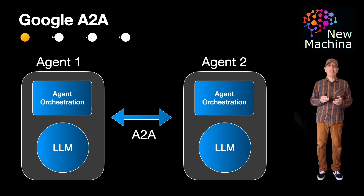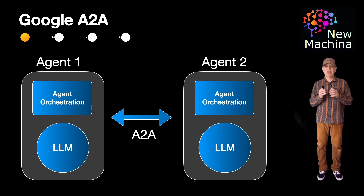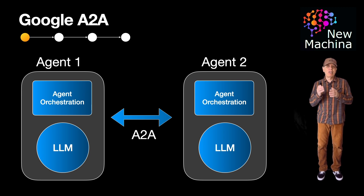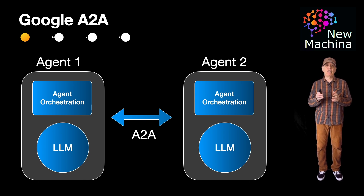But what if A to A is more than just a technology standard? What if it's the key to finally making AI assistants act like a real team, working on tasks together, even if these agents come from different teams, companies, or vendors?